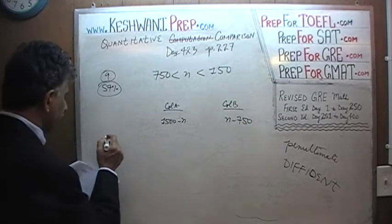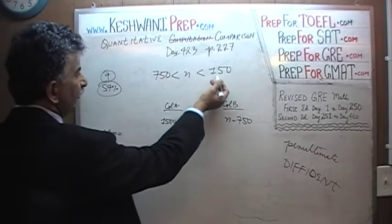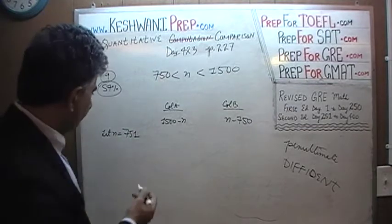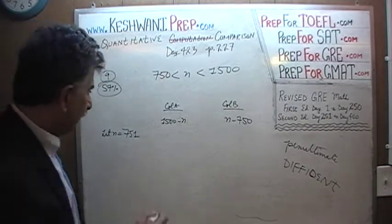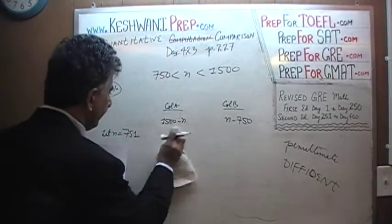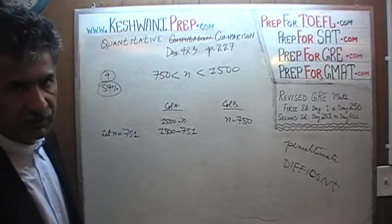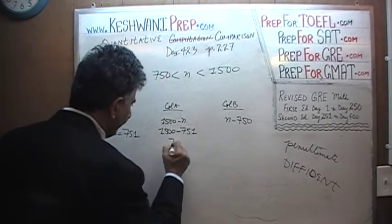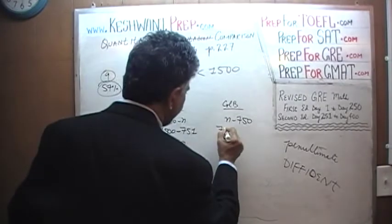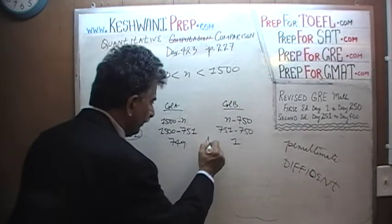Don't just plug in 1000 and solve the problem and that's it. That's what most people who are getting it wrong are doing. Let's be a little bit gutsy, shall we? Let's plug in, let N equal 751, to the outermost edge. If we plug in N equal to 751, here we will get 1500 minus 751, which is 749. And here we will get 751 minus 750, which is 1. Of course, the answer in this scenario is A.